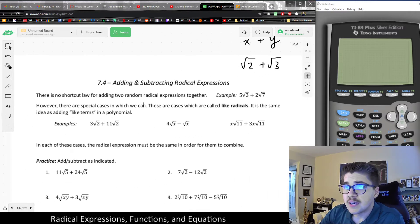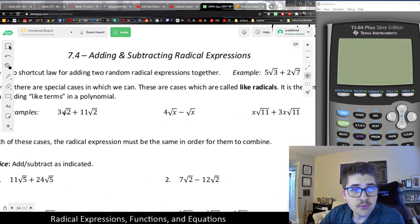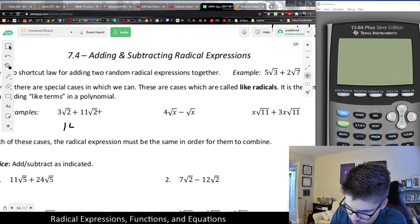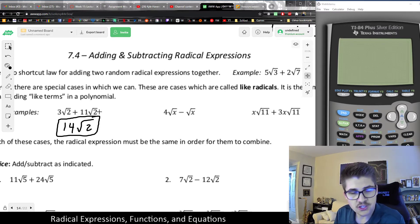Looking at a couple examples, for example, I had 3 times root 2 plus 11 root 2. Those would add and it would be exactly the same as combining like terms. So I kind of imagine in my head this is like 3x plus 11x. So this would make 14x, 14 root 2. And again, notice that the roots don't change. Only the number in front changes as an equivalency.